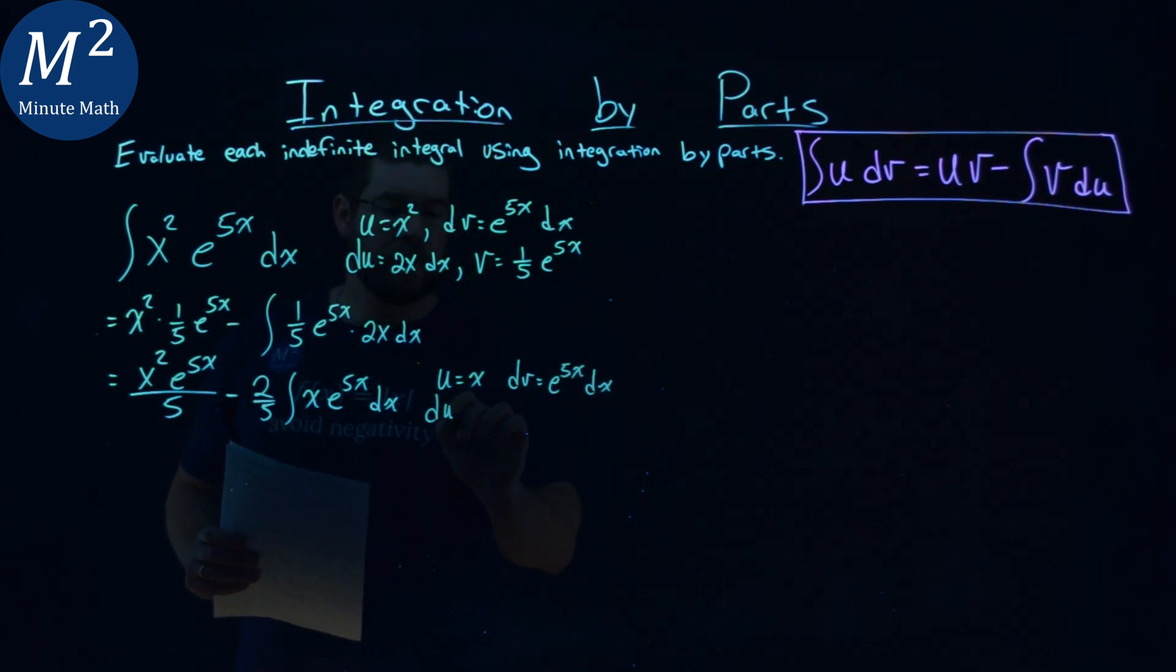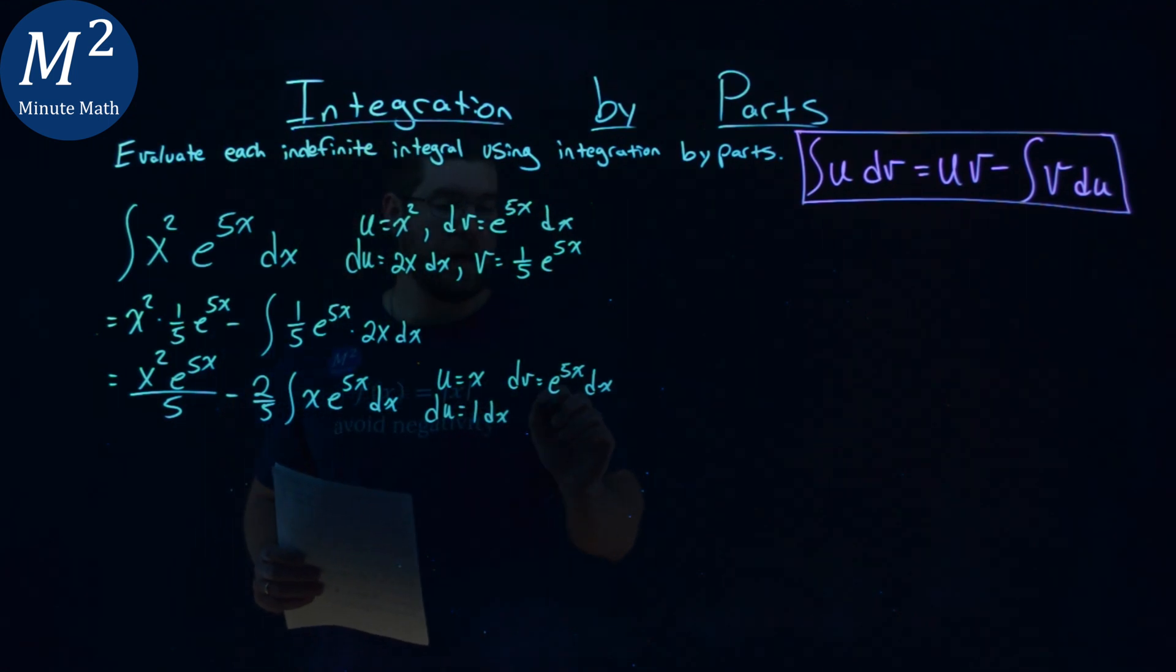and a dv value again to be e to the 5x dx. That makes our du value 1 dx, which is great - I love when I see that. And our integral of dv we've already found: one-fifth e to the 5x power.